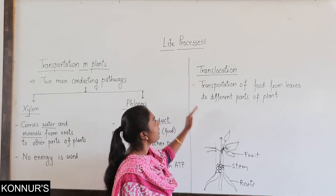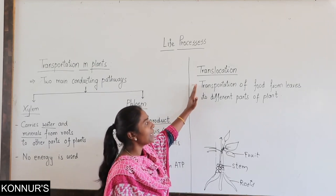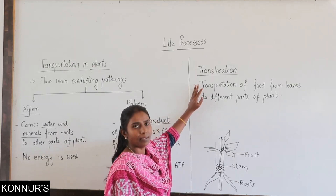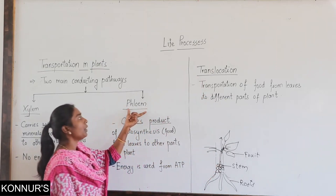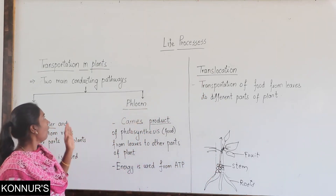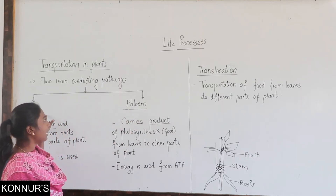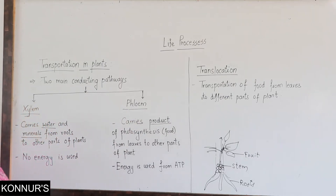Translocation is nothing but transportation of food from leaves to different parts of the plant. Translocation is the process carried out by phloem. So this is all about the two conducting tissues — xylem and phloem — which constitute the transportation system in plants.